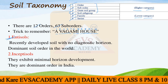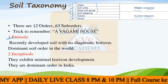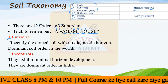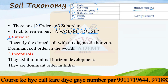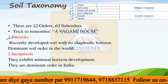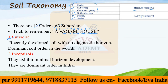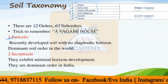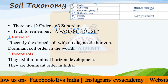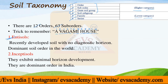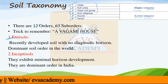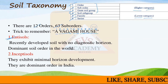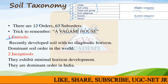Then we have Inceptisols. Inceptisols exhibit minimal horizon development and they are the dominant order in India. If you look at India, the highest amount of soil type you can find is Inceptisols. In Entisols, no horizon development takes place. In Inceptisols, a little amount of horizon development takes place - not fully developed horizons. For example, alluvial soil will only have the O horizon and then A horizon; the remaining horizons are missing. So that is under the Inceptisols. In India, the highest percentage of soil type you can find is Inceptisols.